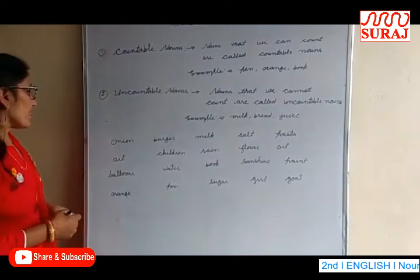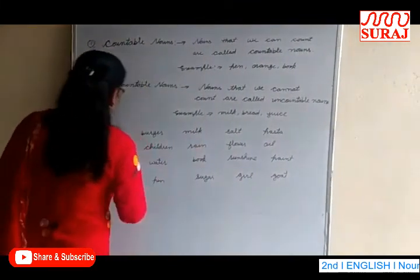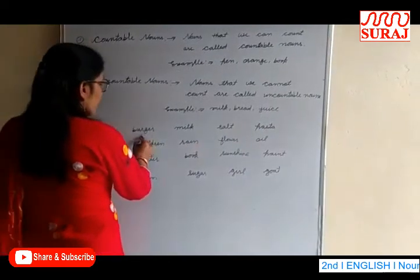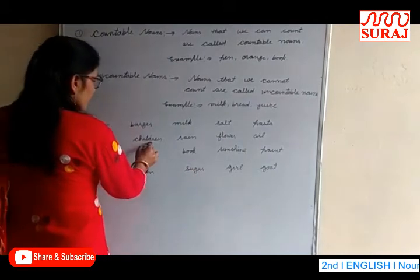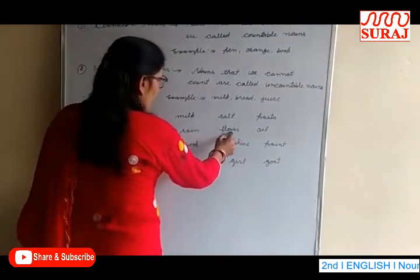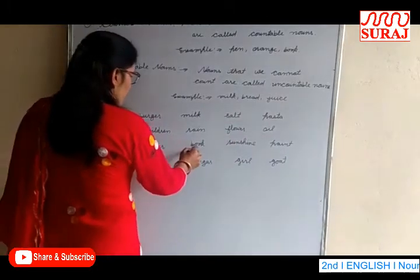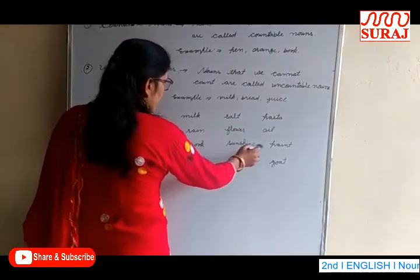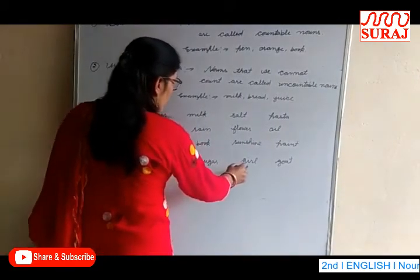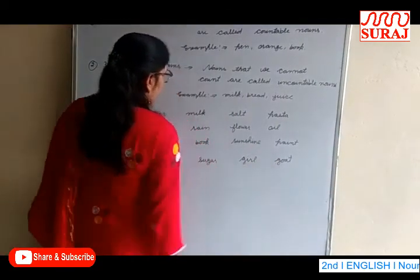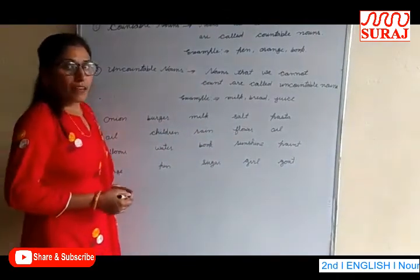We will now choose which words are countable and which are uncountable from the following list: onion, burger, milk, salt, pasta, oil, children, rain, flower, oil, balloons, water, book, sunshine, paint, orange, pen, sugar, gold.